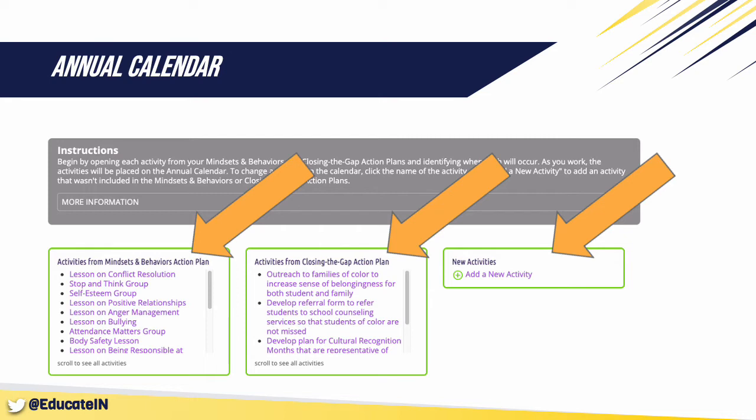Finally, you'll also see a box for new activities. These will be other activities besides your lessons, groups, and indirect activities from your Mindsets and Behaviors Action Plan and Closing the Gap Action Plan, which you can begin adding here to your calendar for next year. We'll start with the first box — the lessons and groups from your Mindsets and Behaviors Action Plan.